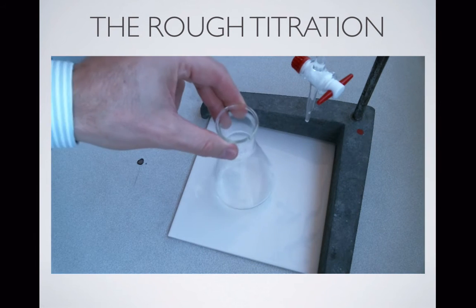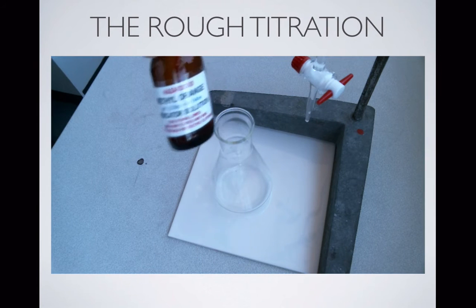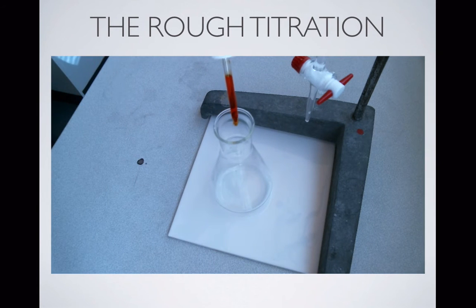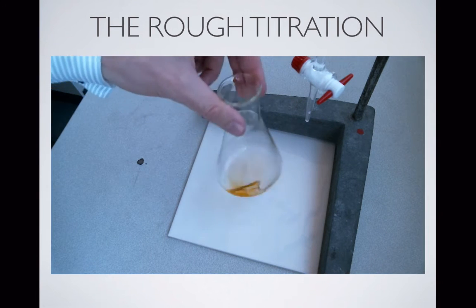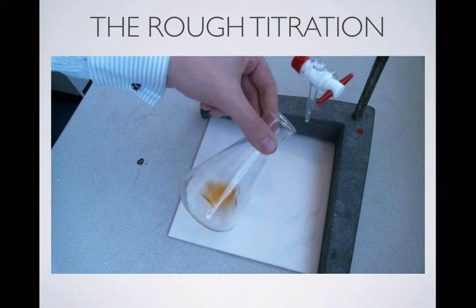Okay, so here's our flask with the aliquot in. This is actually sodium carbonate. We're using methyl orange as our indicator. There's other indicators we could use, but we're just going to add a few drops of indicator. Whichever indicator it is we're using, you don't need more than a few drops. Give the flask a bit of a swirl so that everything's well mixed and we'll pop that underneath our burette.